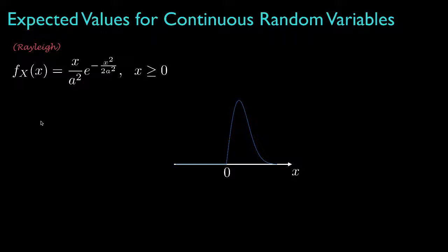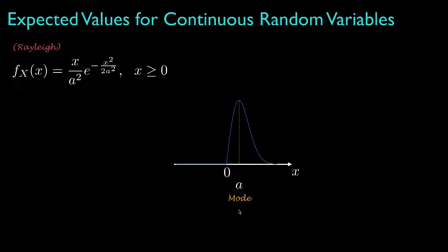Using this example, we can illustrate a few of the common ways that probability densities are characterized in general. One of those ways is by specifying the place at which the density attains its largest value. For some densities there will be several such places, but for this particular density it only happens in one place — when x equals the parameter A. This is called the mode for a probability density.